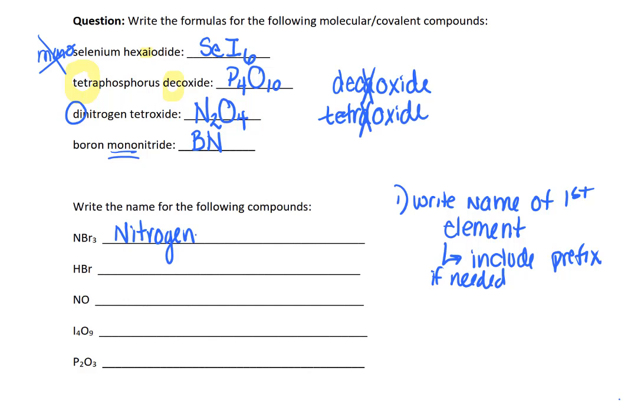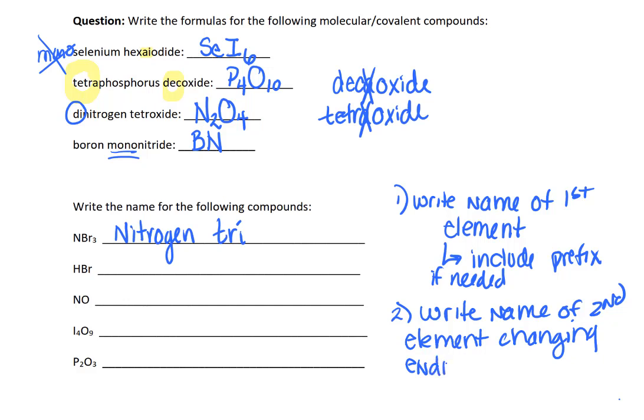Then we're going to tell the reader how many bromines we have with a prefix. So tri, because there's three, and then we're going to take the word bromine, we're going to drop the ending and add ide. So we will write the name of the second element, changing the ending to ide, and adding a prefix.